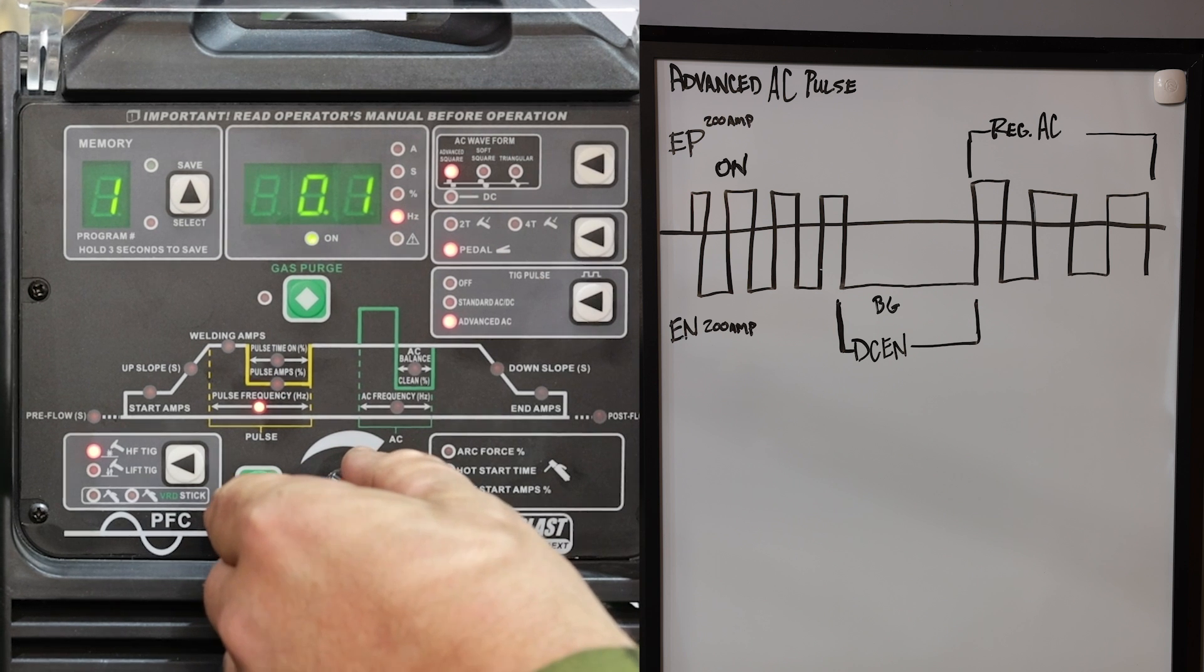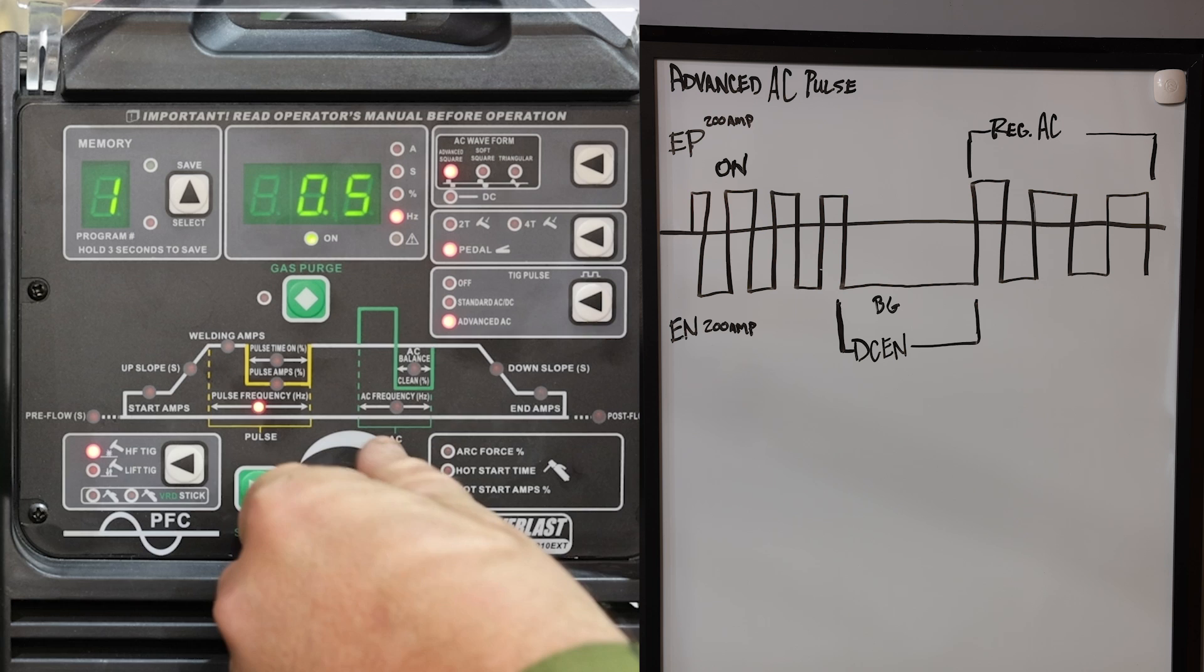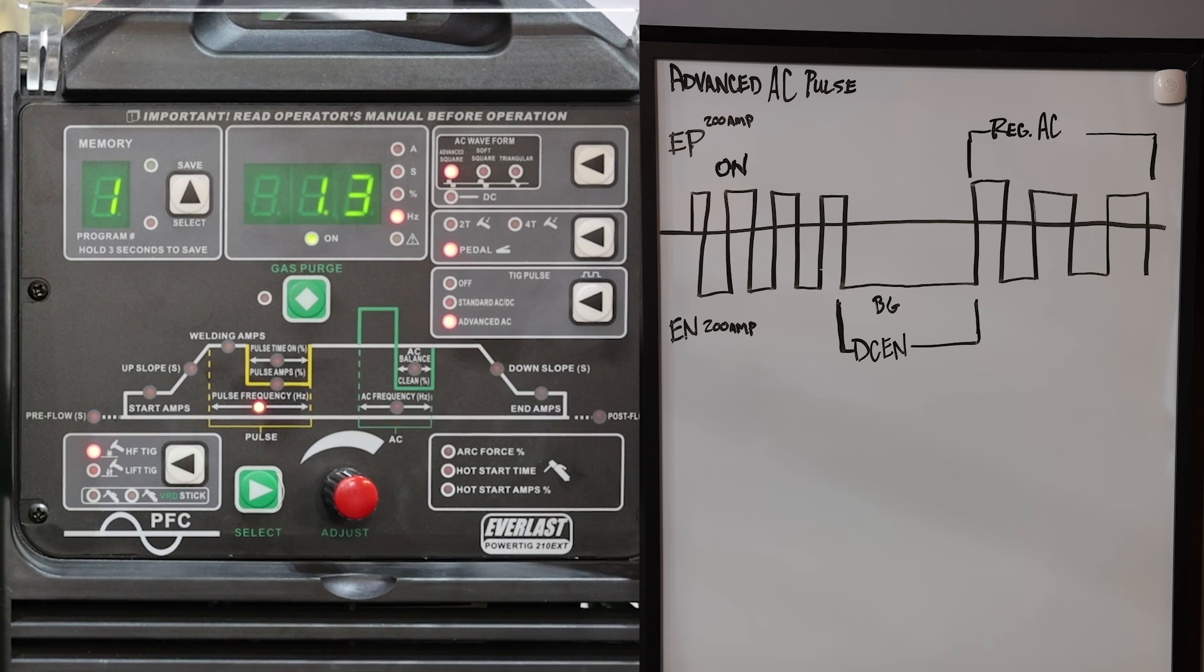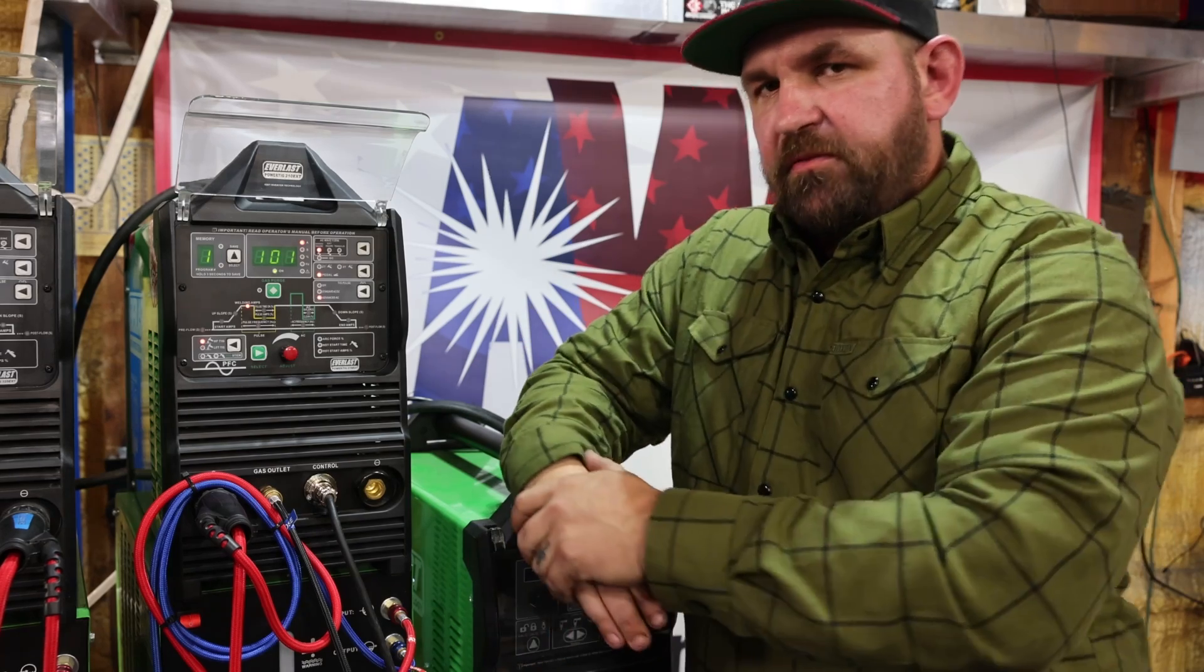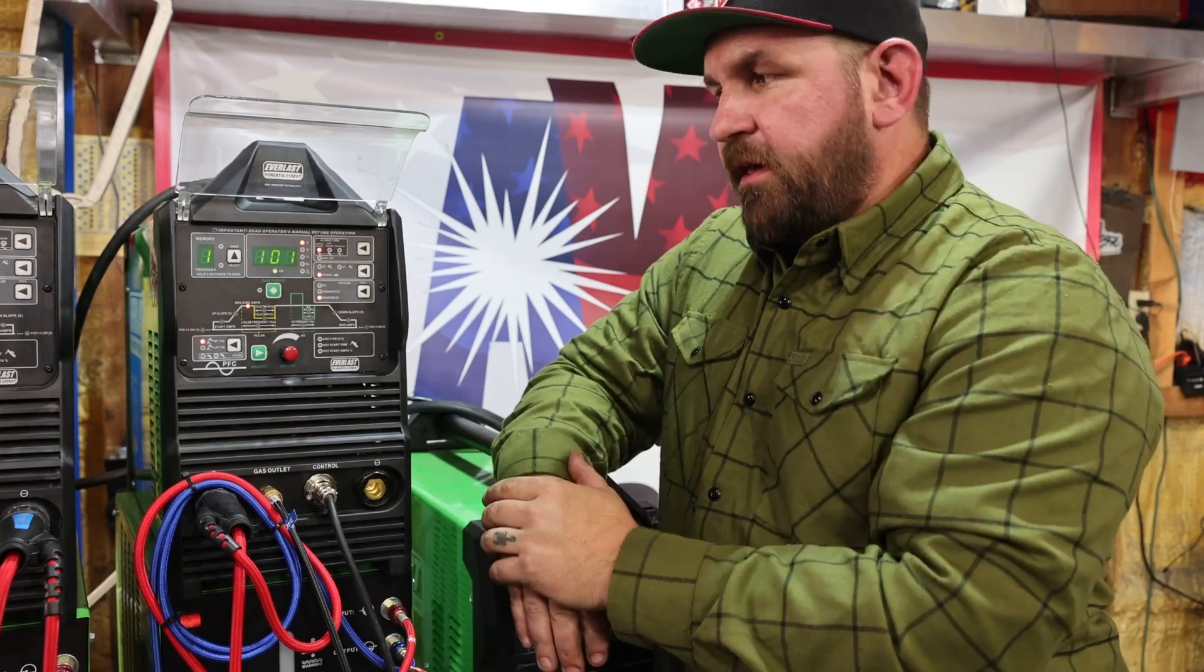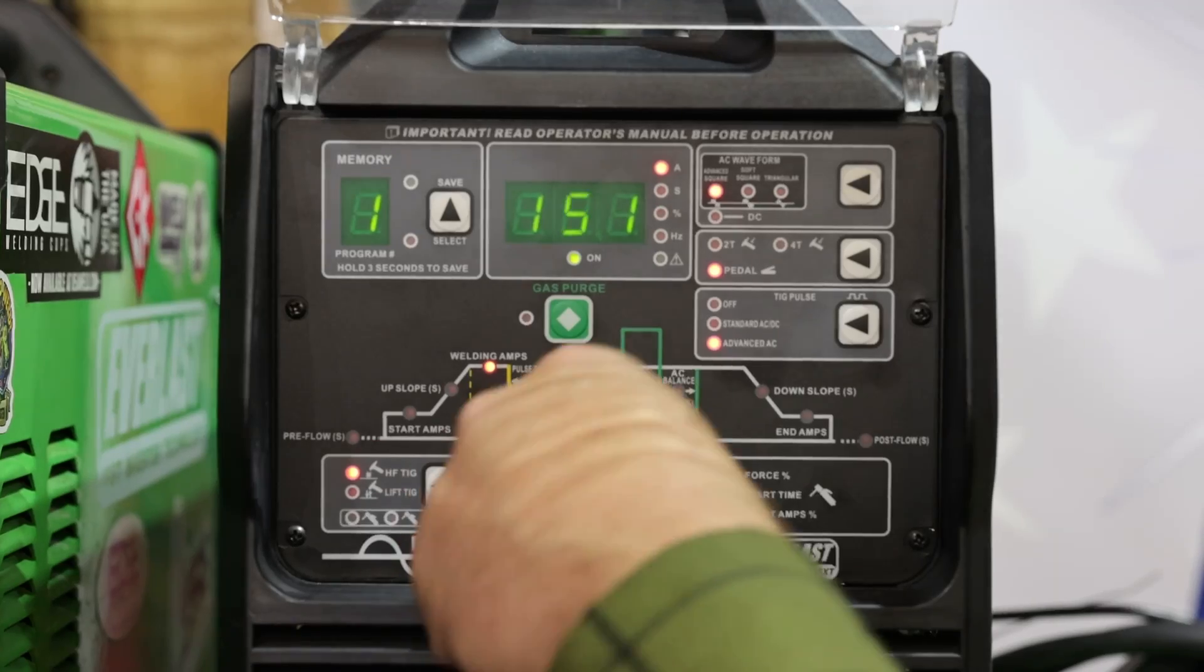Next, we set our pulse frequency. This is Hertz, which is pulses per second. So we're going to go ahead and I like 1.3 Hertz, which is 1.3 pulses per second. This is slow enough that you have enough time to dip on the AC part of the pulse wave. Now, because we're running this 210 EXT, even though we're on advanced AC, we still need to turn the machine all the way up.